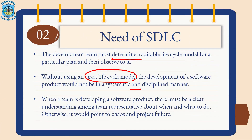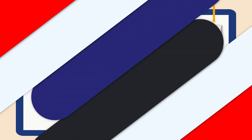Hence, when a team is developing a software product, there must be a clear understanding among the team representatives about what and when to do. Otherwise, as I said, it would lead to project failure.